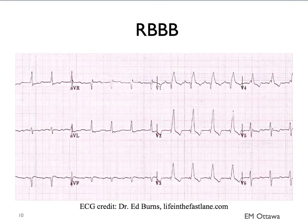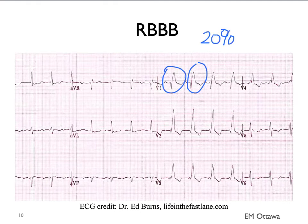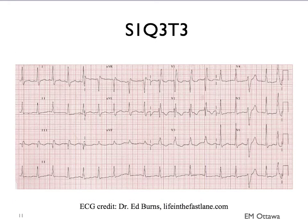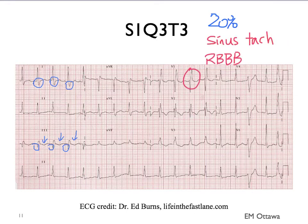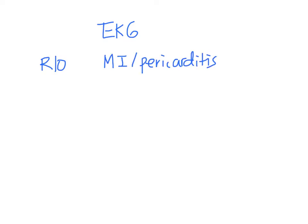We sometimes can see a right bundle branch block in patients with PE, occurring in about 20% of patients. In about 20% of patients with PE, their ECG will show what's known as an S1Q3T3 pattern — a prominent S wave in lead 1, a Q wave in lead 3, and an inverted T wave in lead 3. You may also note that this ECG shows sinus tachycardia and a right bundle branch block. Therefore, we use the ECG first to rule out other diagnoses, then look for clues that may point towards a PE.